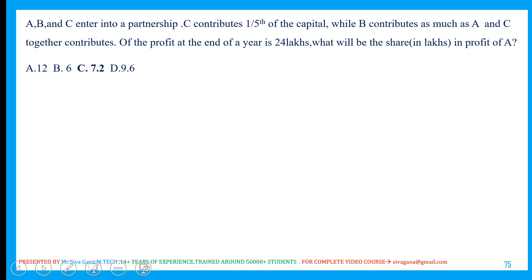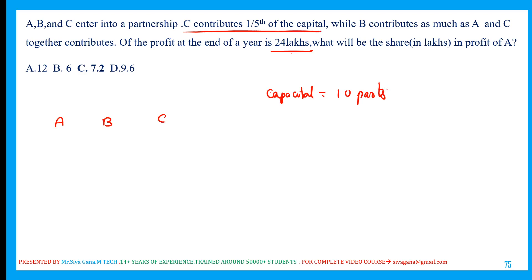Next: A, B, C enter into a partnership business and a profit of 24 lakhs is to be shared in a certain ratio. C contributes one-fifth of the total capital. Taking total capital as 10 parts, one-fifth of 10 is 2, so C gets 2 parts. The remaining 8 parts go to A and B.